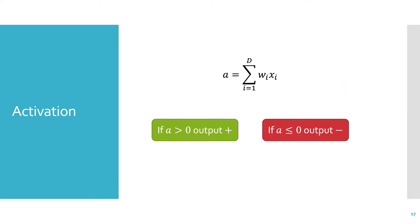Let's look at the activation function. It's just a weighted sum. If a is greater than 0, then we output positive, or 1, or whatever you've decided is the value of your positive class. If a is less than or equal to 0, then you output negative, or negative 1, or 0.